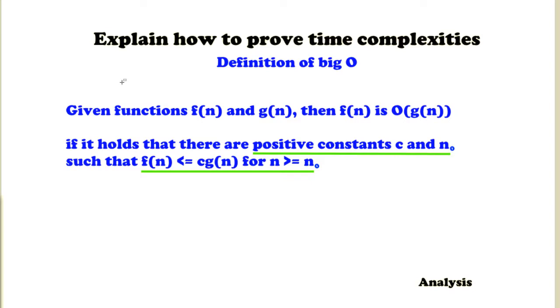Let's start with explaining how to prove time complexities and I will just base the proof on the definition of big O. Given functions f(n) and g(n), then f(n) is O(g(n)) if it holds that there are positive constants c and n₀ such that f(n) is smaller or equal to c times g(n) for n greater or equal to n₀.